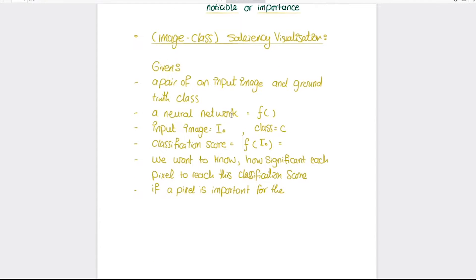To understand the mathematical concept behind this, we will go through an example. Let's say we have an image of a cat and we have a neural network which can classify this input image as a cat. We have an image and a label related to this image. If this image is being fed into a neural network — we will call this neural network function F, the input image I-naught, and the label class C representing the cat — the classification score is a function of I-naught. We need to see which pixels in the input image are pushing the classifier to take the decision of classifying the image as a cat.